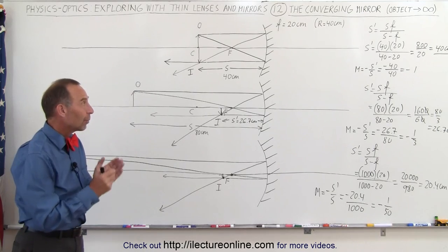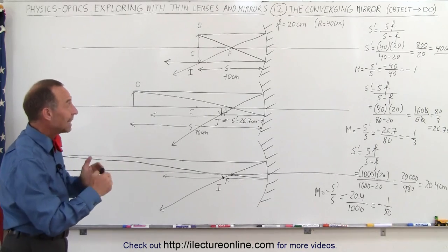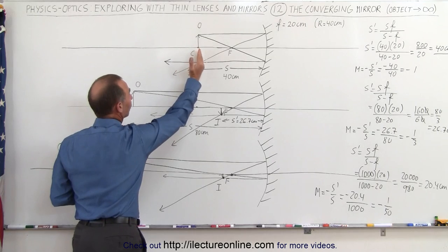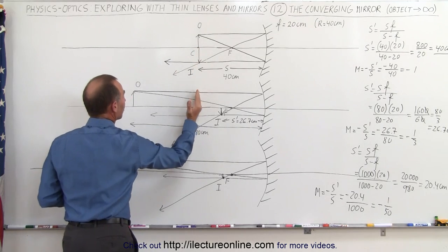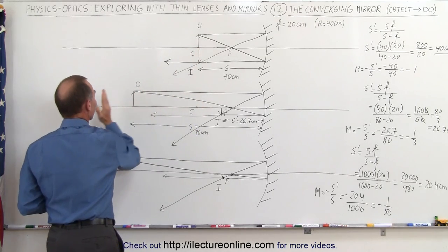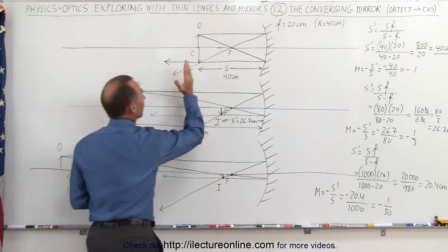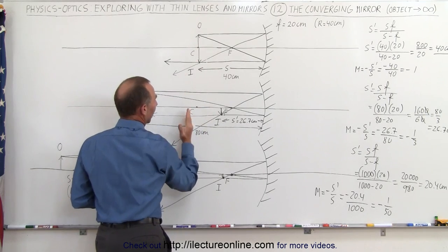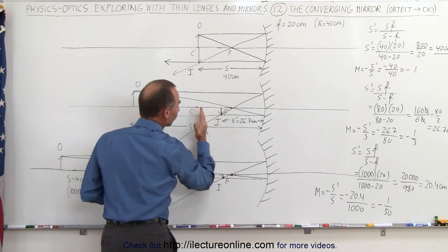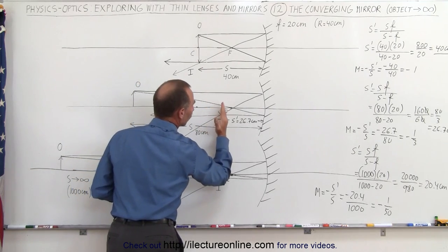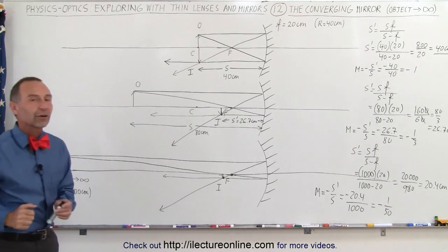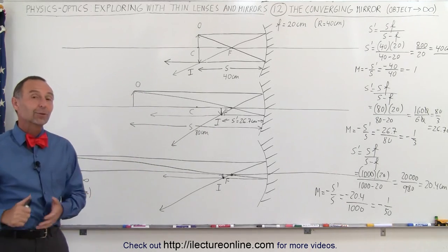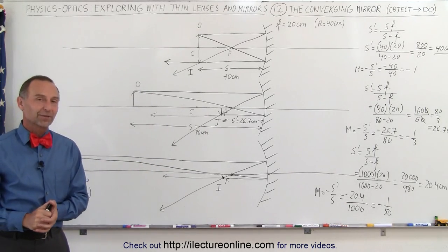That's how we see what happens to the object and image. Starting with the object at the center of curvature and moving it farther and farther away, the image starts at the center of curvature and then moves closer and closer to the focal point as the object moves farther away. That's how we deal with converging mirrors.